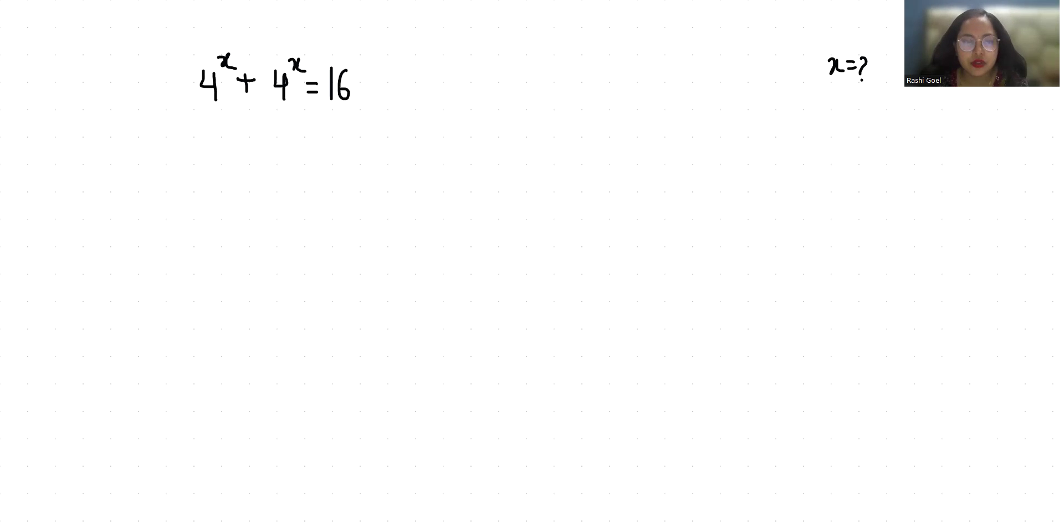Let's start with today's video solution. If I take 4^x as common, so 1 + 1 equals 16. 4^x times 2 equals 16. Now I'm going to divide both sides by 2.